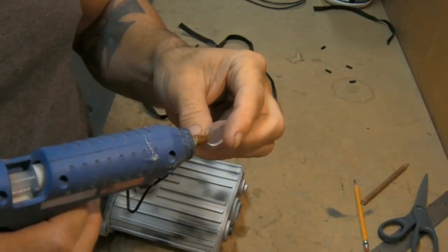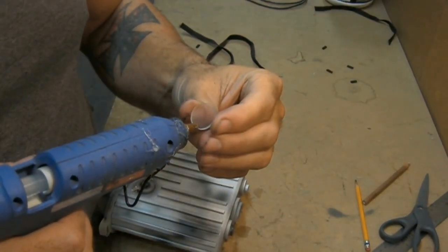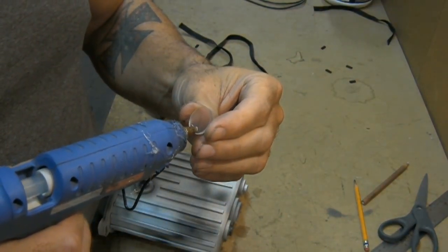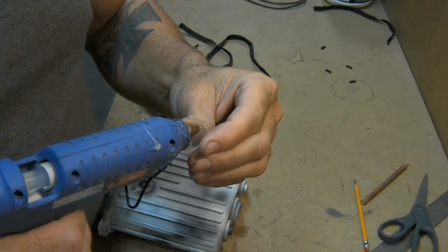Once the paint's dry, you can glue in your plexiglass lenses. I'm using hot glue here but you could use contact cement or super glue as well.